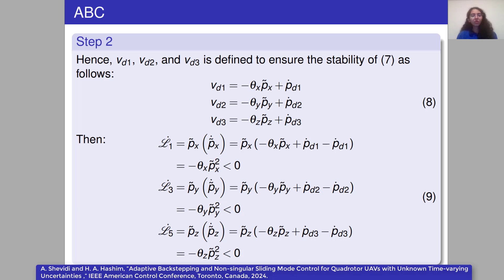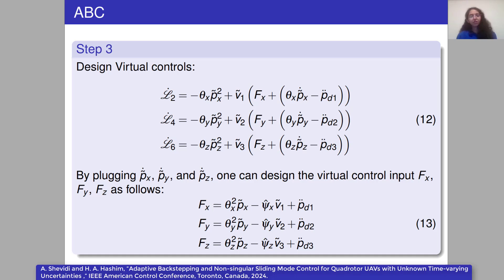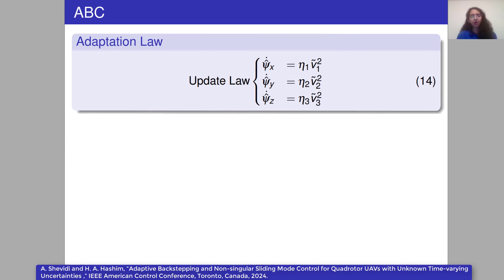We guarantee the convergence of the actual linear velocity to the desired values. By doing so, we define the Lyapunov function candidate as follows. Finally, we design the virtual controllers Fx, Fy, and Fz based on adaptive back-stepping control. The adaptation law is proposed by this update law, with which the control parameters will be updated.